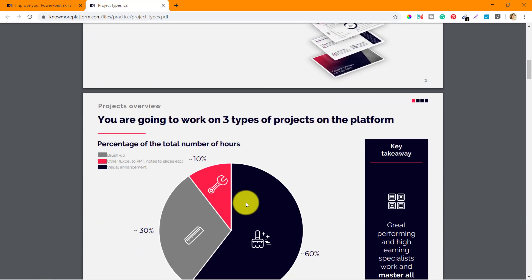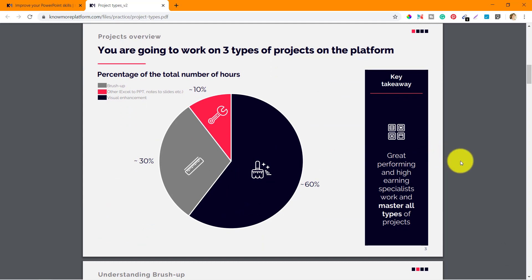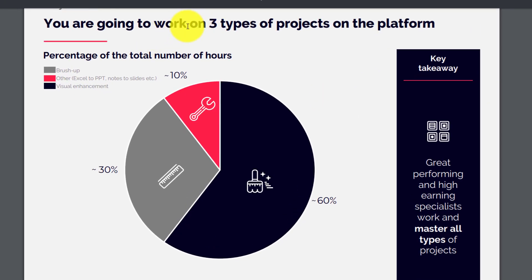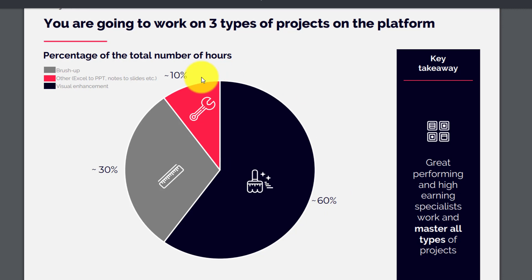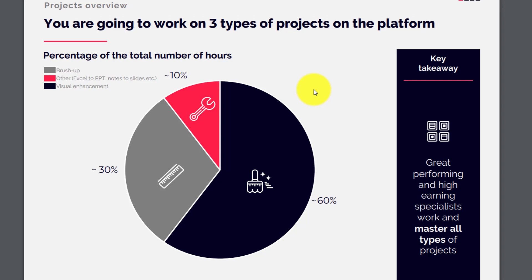These documents are very important, so pay attention to the explanation. You are going to work on three types of projects on the platform: one is brush up, one is visual enhancement, and the other is Excel to PPT or notes to slides. Brush up would be around 30 percent of the work, visual enhancement around 60 percent, and for only 10 percent of the time you will be creating fresh PowerPoint presentation slides from hand notes or Excel files.